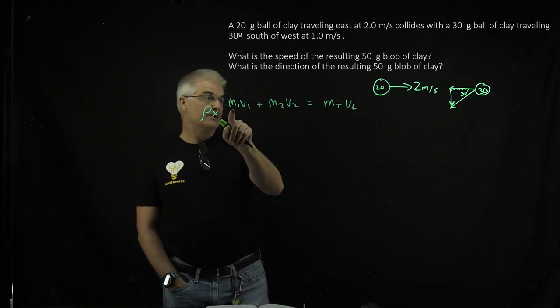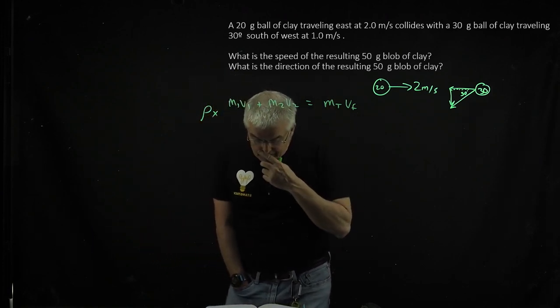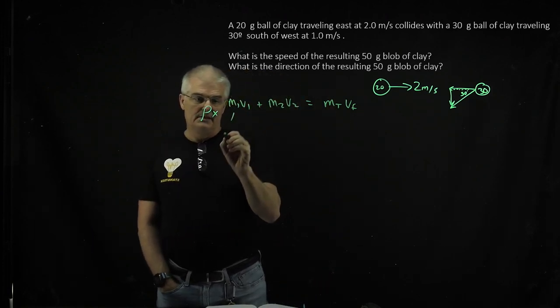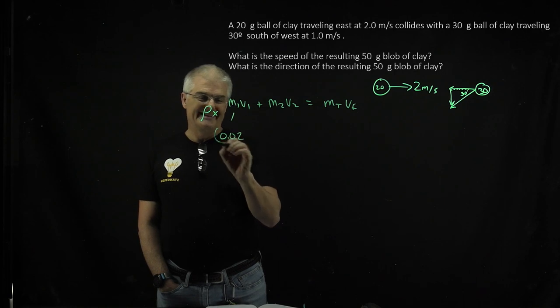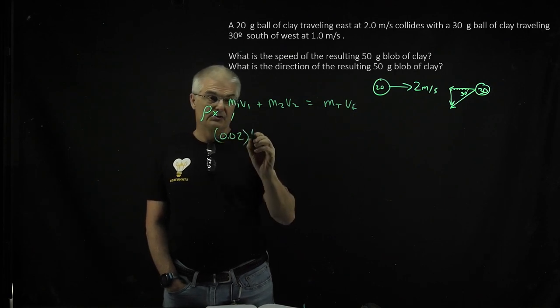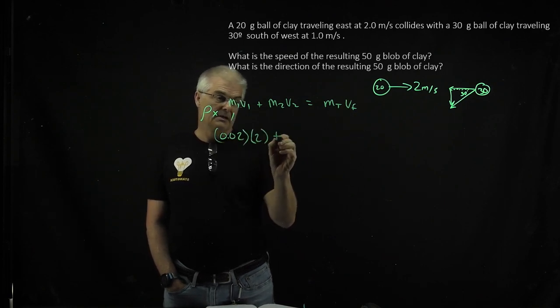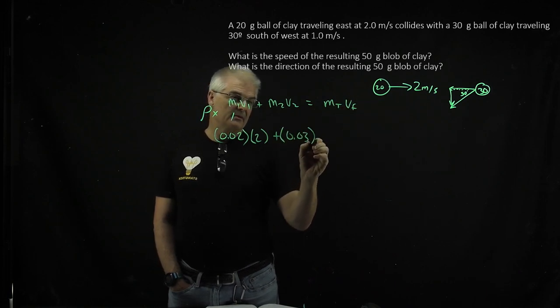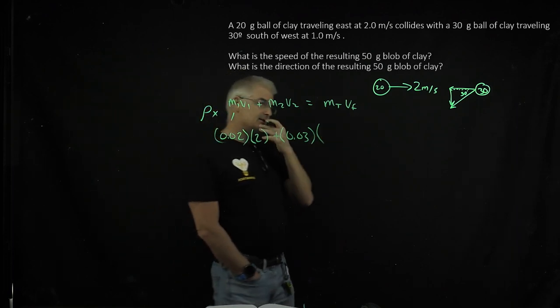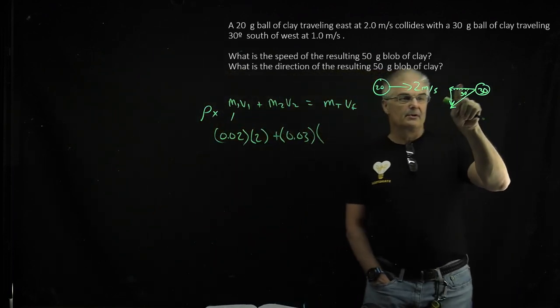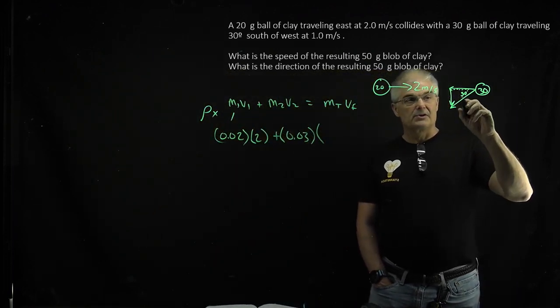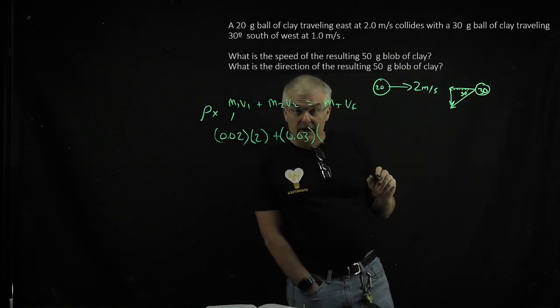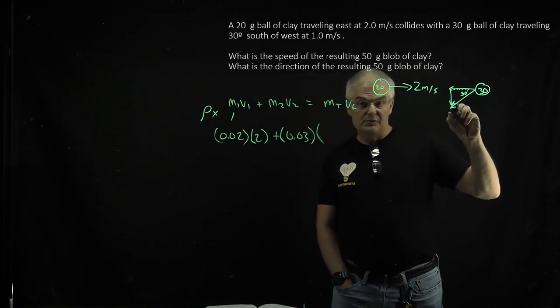I know the mass of ball 1 is 0.02 kg, and in the x direction it's moving at 2 meters per second. Plus the mass of ball 2, which is 0.03 kilograms, times its velocity in the x direction. I've got to do a little math here since this is traveling at 1 meter per second. This is going a lot slower.